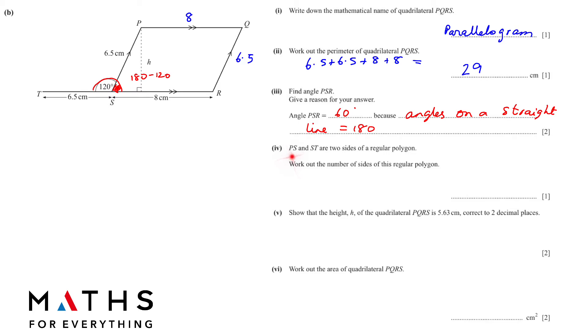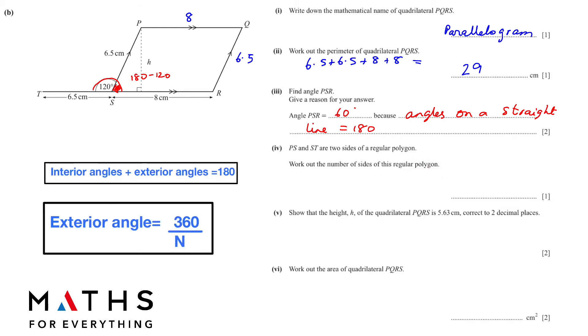Next, PS and PT. PS and PT are two sides of a regular polygon. Work out the number of sides of this regular polygon. There are two rules that we need to know. Interior angle plus exterior angle is equal to 180. Our interior angle is 120 and the exterior angle is 60. And then, the exterior angle is equal to 360 over N. We can rearrange it. We got the exterior angle which is 60. We want to find N. N is the number of sides. So we cross multiply. N is equal to 360 divided by 60 which is 6. So the number of sides are 6.